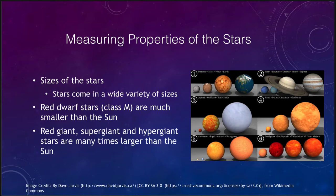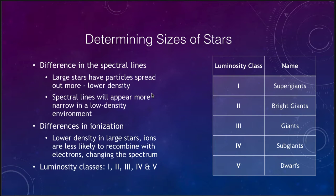How can we determine the size of a star? We can use the spectral lines to help expand our classification. Large stars are more spread out, have a lower density, and their spectral lines therefore appear more narrow. A very small star will have a higher density and therefore much broader spectral lines. We will also see differences in ionization — in large stars the lower density means ions are less likely to recombine and will give us a slightly different spectrum.